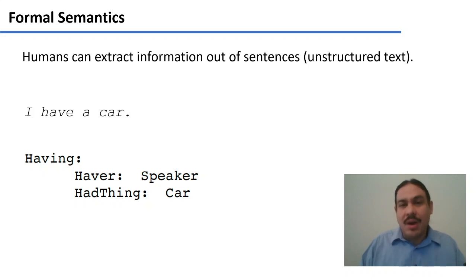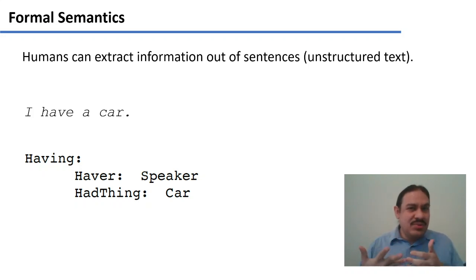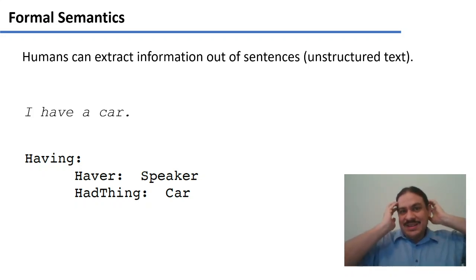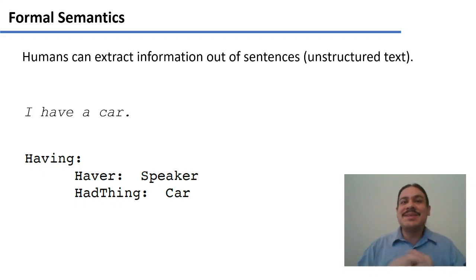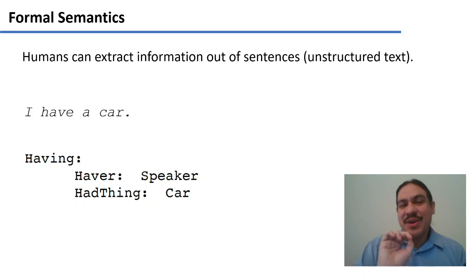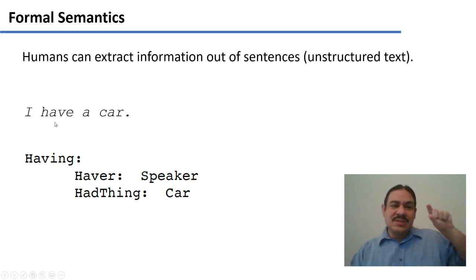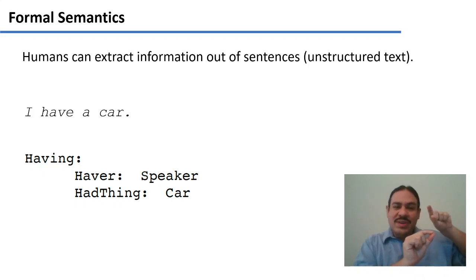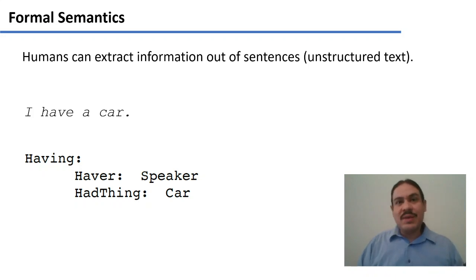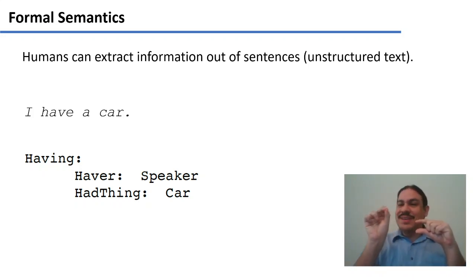Let's look at formal semantics. Let's say you have a sentence like 'I have a car.' You could describe this as the action of having, which is in the verb. So this function takes its name from the verb — it's the function 'having,' and it has two arguments. There's a haver of the action — the haver is the speaker — and there's something that is had, the 'had thing,' which is the car. This could apply to every sentence. For example, 'I eat pizza': the function would be 'eat,' the eater would be 'I,' and the thing eaten would be 'pizza.'